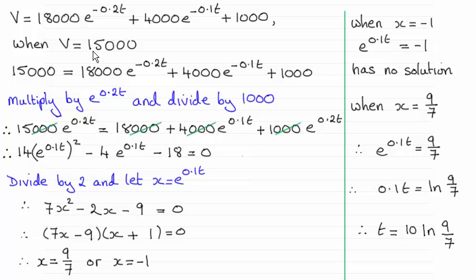Obviously we substitute 15,000 into this equation here. And then noticing that that gives us some negative exponential values, I wanted to get rid of these.